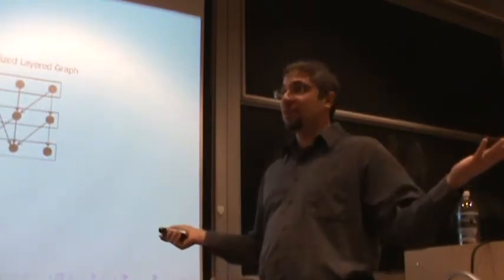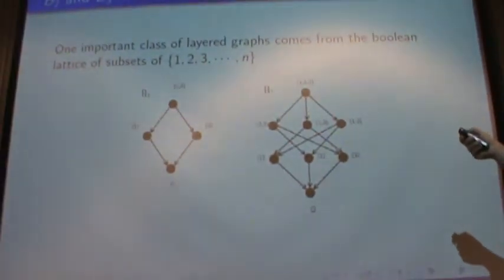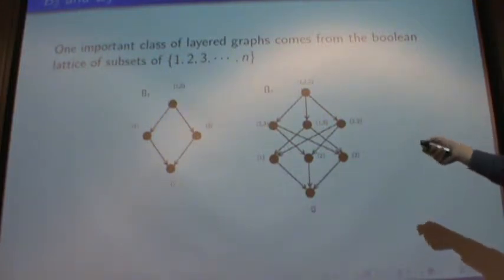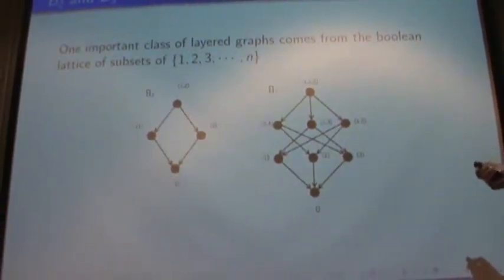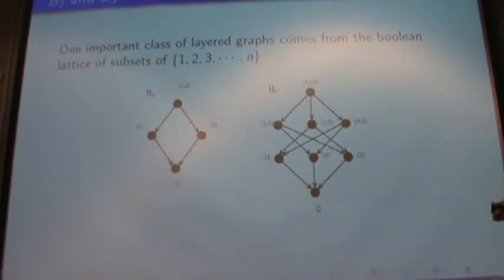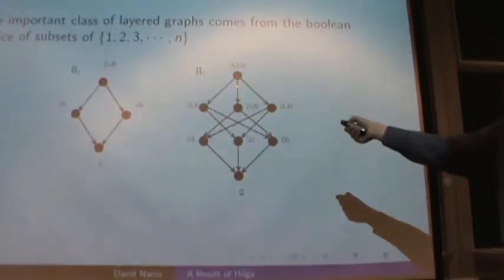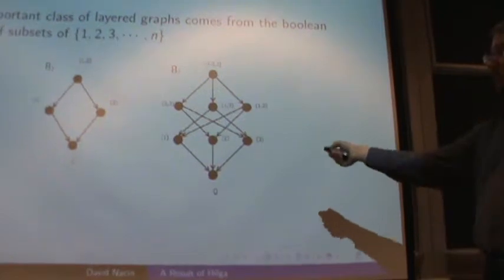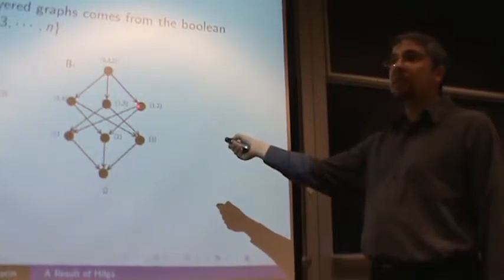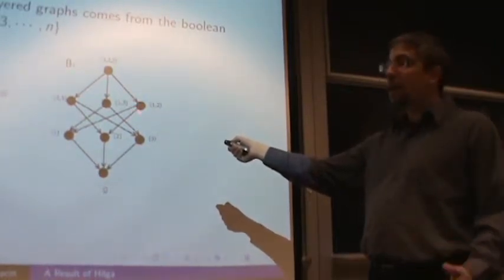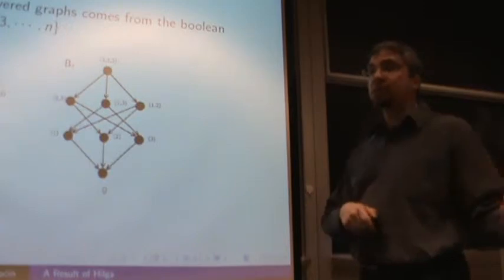We're actually going to be looking at these graphs as Po sets, because these are going to be the Hasse graphs of Po sets, and we're going to be going back and forth throughout the talk. The Boolean lattice is usually thought of as a Po set. What you can do is take the subset relation between any two sets and say A is less than B whenever A is a subset of B. If we want to make this into a layered graph, we draw an edge from A to B whenever B happens to be a subset of size one less. We will be looking at this as both a layered graph and as a Po set at different times.